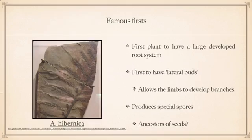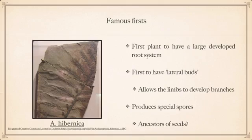A couple of other firsts: it's the first plant to have a large developed root system, which becomes absolutely staggeringly important for our planet's history. It's the first to have lateral buds, which are the features on limbs that allow them to develop branches. They also produce special spores which, as hinted at earlier, could have become the ancestors of seeds — something very much argued in not only botany and ecology, but also paleontology.